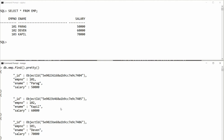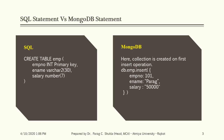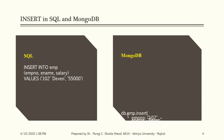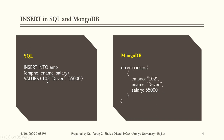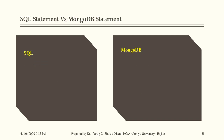To summarize: a collection is created on the first insert via db.employee.insert(), or explicitly using db.createCollection(). The benefit is that the record is inserted and the collection is created simultaneously if it doesn't exist. In SQL, INSERT INTO specifies column names and values. To drop a table in SQL: DROP TABLE tablename; in MongoDB: db.employee.drop().